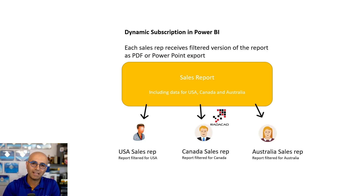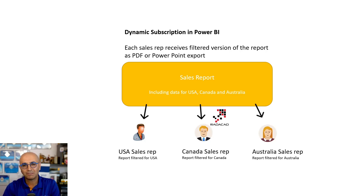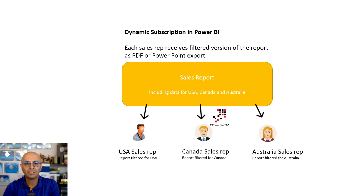So what this is about: assume this scenario. Let's say you have a general report. This report has data categorized by departments, branches, cities, countries, different sales representatives — any ways that you can categorize it. That report includes all of those categorizations, and what you want to do is send a scheduled export of this report as a PDF or PowerPoint to the email addresses of recipients.